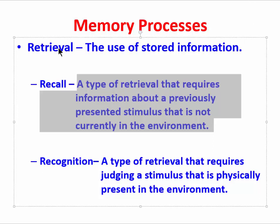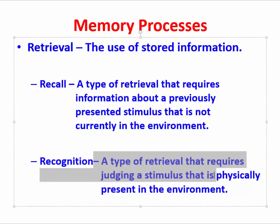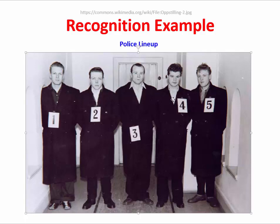We can contrast recall with another type of retrieval: recognition. This is a type of retrieval that requires judging a stimulus that is physically present in the environment. Most people typically report that recall is quite a bit more difficult than recognition. To understand recognition, let's take a look at a simple police lineup. In this picture, each person is donning a number one through five, and you as a witness might be asked to recognize which of these folks may have committed the crime of interest. If they instead had asked you to report a description without showing you the picture, that would be recall.